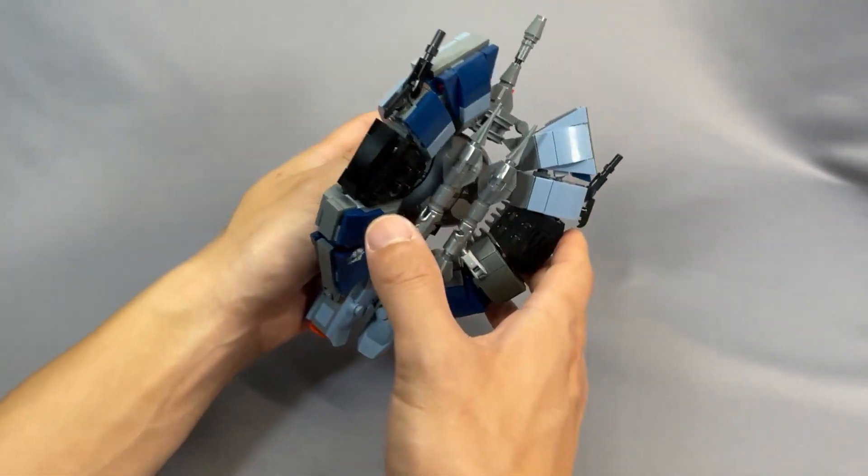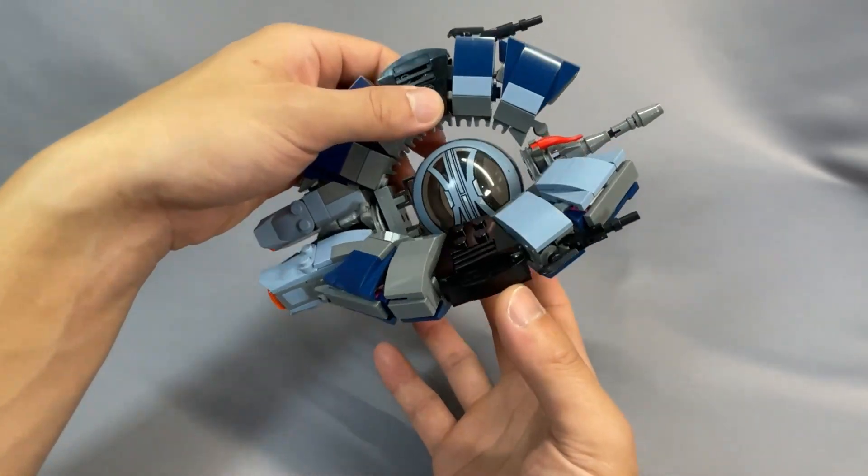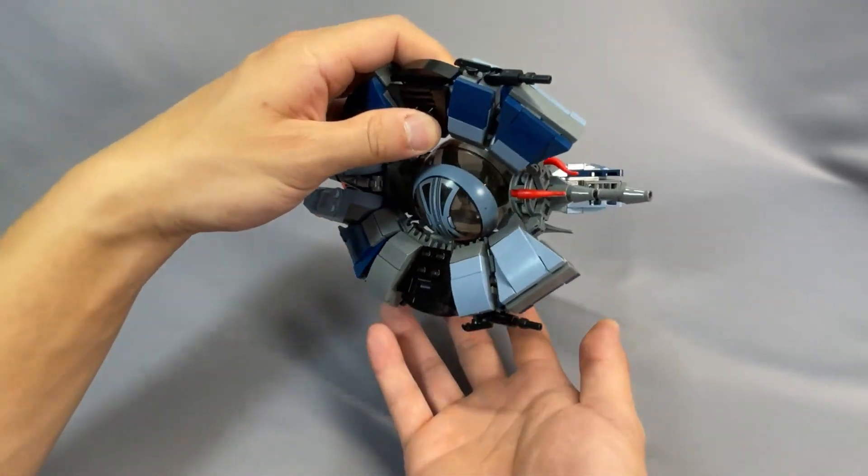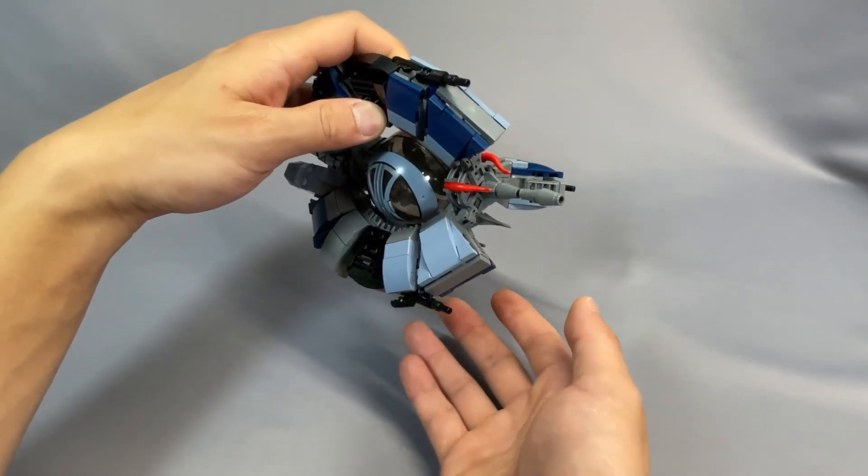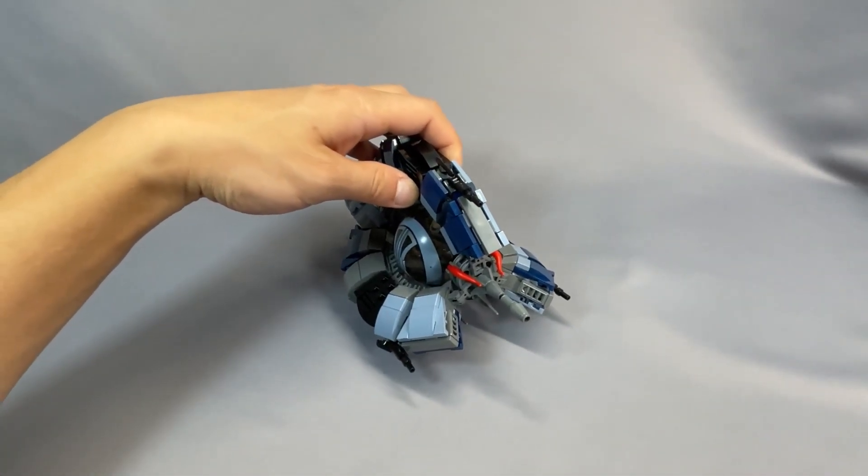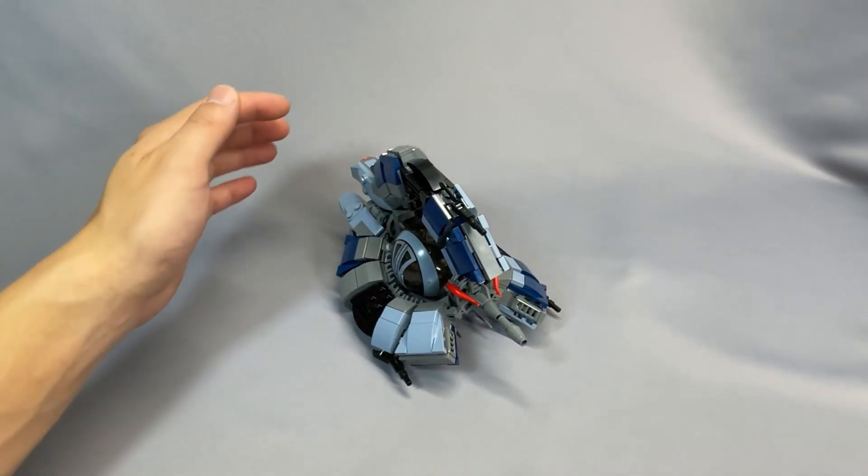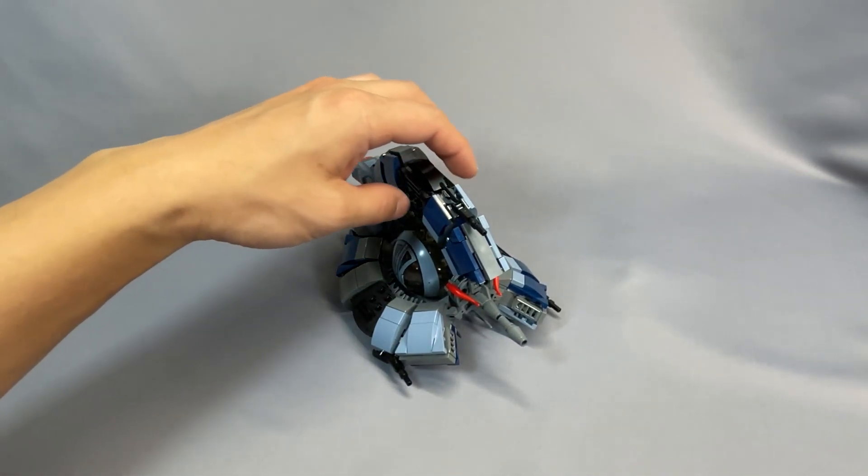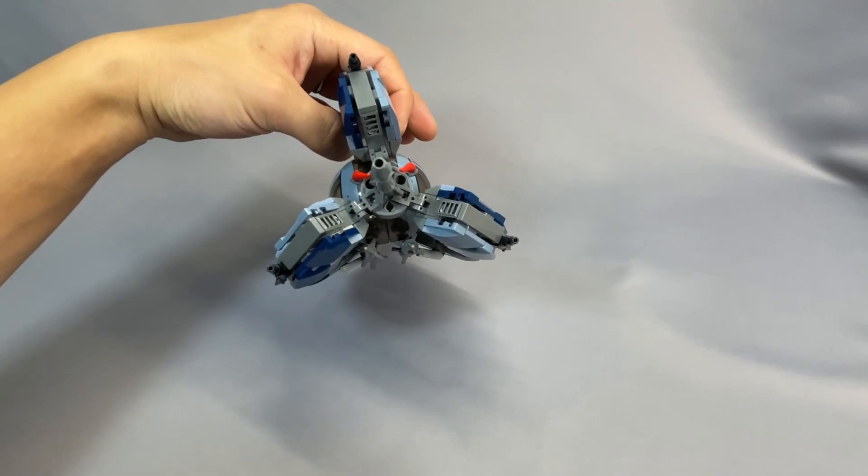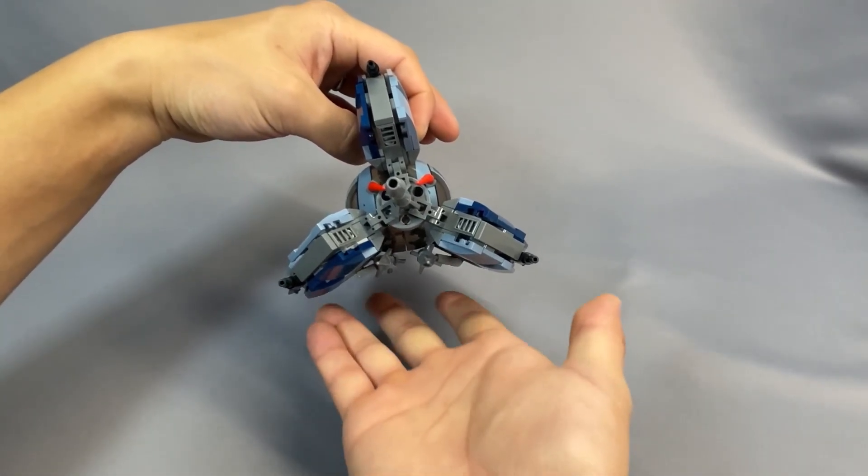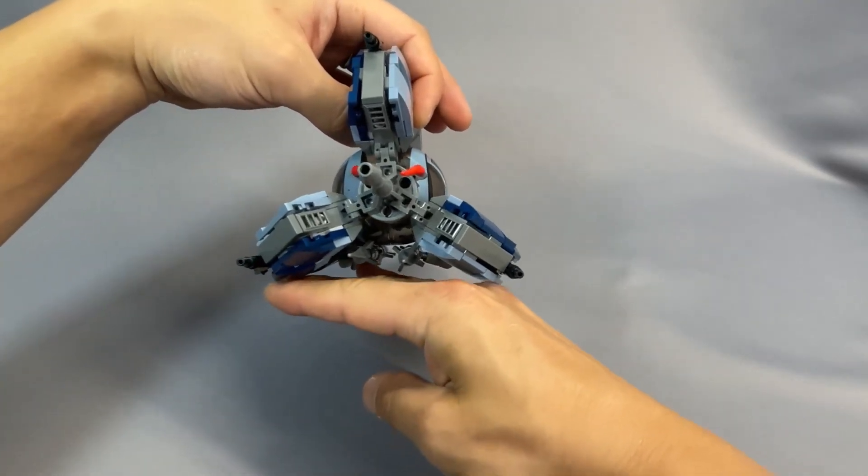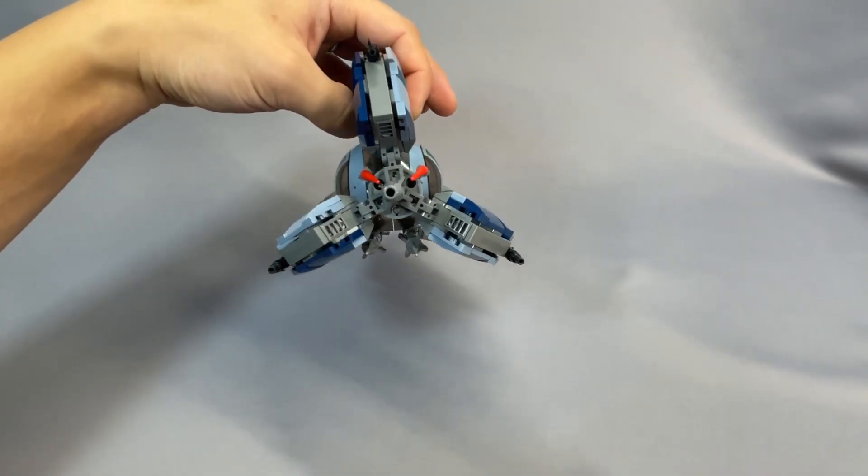And like I said, a stand for this model would be really nice, but there's no obvious connection point. Hopefully Grimder, or maybe someone else, can come up with a good solution for it. But it sits pretty well on the bottom fins, and it doesn't seem to affect the integrity of the missiles because the missiles are slightly raised into this little area between, so the flat surface is here and the missiles are just above it, so you're fine there.